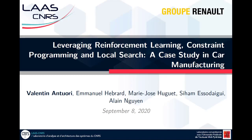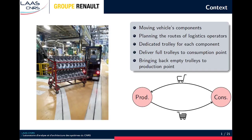Hi, I'm Valentin Arturi and I'm going to present our paper about reinforcement learning for a car manufacturing problem. We are interested in planning moves of vehicle components across an assembly line. We have logistics operators who are in charge of collecting components from working stations and delivering them to their consumption points in such a way that there is no break in the manufacturing process. These components are carried over using trolleys that can be stacked forming a train that should not exceed a given maximum length, and each trolley is specific to a component. The problem is to move these carriage trolleys when they are full from their production points to their respective consumption points, and symmetrically to bring back the trolleys when they are empty.